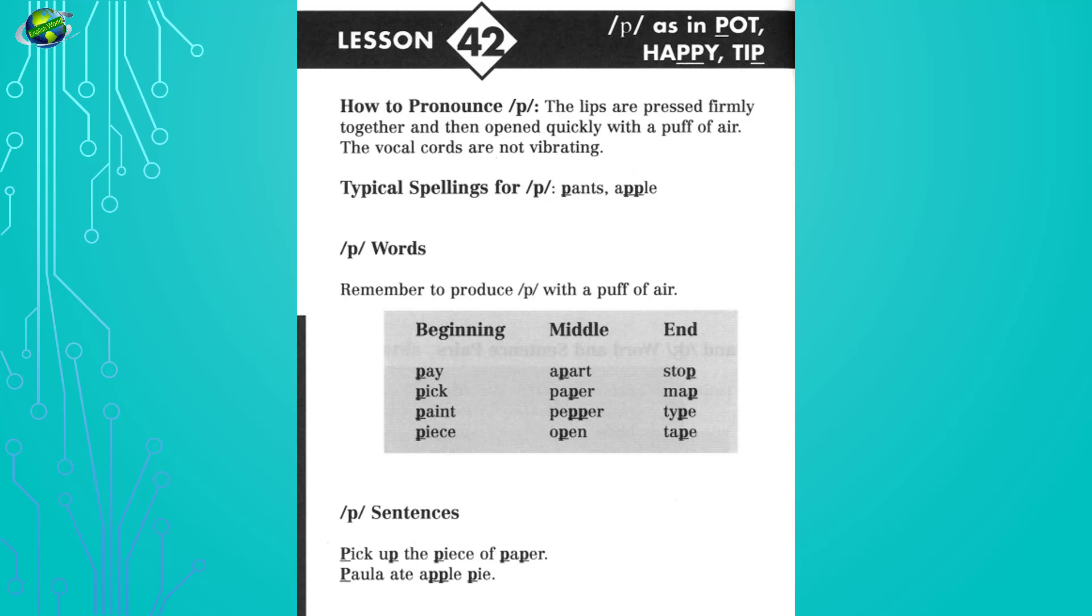Lesson 42: P as in pot, happy, tip. Listen and repeat. Pay, pick, paint, peace, apart, paper, pepper, open, stop, map, type, tape. Pick up the piece of paper. Paula ate apple pie.